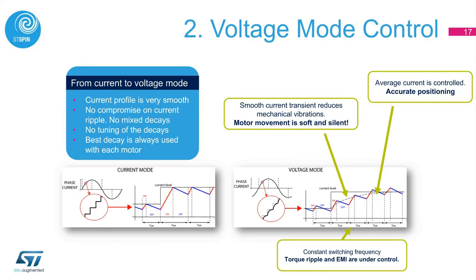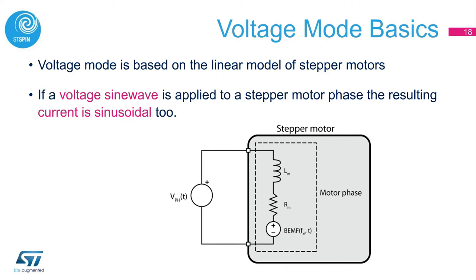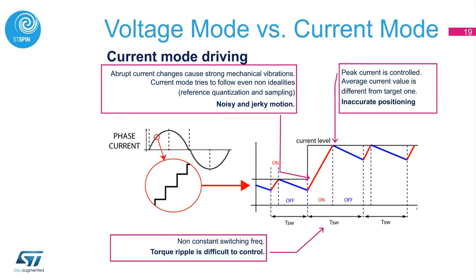The voltage mode control is the second key differentiator of PowerStep01 and its digital motion engine. It is an innovative driving technique that achieves very smooth motion, superior position accuracy, and silent operation. The voltage mode is based on the linear model of stepper motors — if a voltage sine wave is applied to a stepper motor phase, the resulting current is sinusoidal too. Which one is better: current mode versus voltage mode?